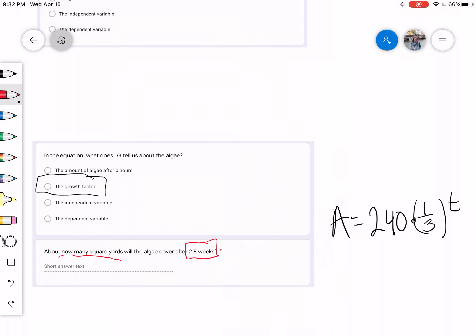So we're going to substitute our time in weeks with what we know, which is 2.5. So you have A equals 240 times one-third raised to the 2.5 power. Now this is where it gets a little tricky. You're going to have to use order of operations to first solve your exponent if you do not have a calculator that can do that for you.